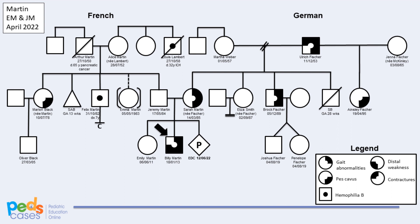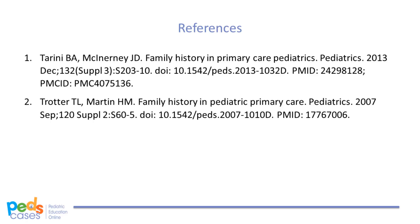Thank you for listening to part one of our video. We hope that you now have an understanding of the importance of taking a family history, as well as the basics of pedigree notation. Head over to part two of our video, where we'll discuss patterns of inheritance and the way they appear in pedigrees. Check out www.pedscases.com for more great podcasts, videos, interactive cases, questions, and more. Press subscribe on iTunes to get access to all of our podcasts.